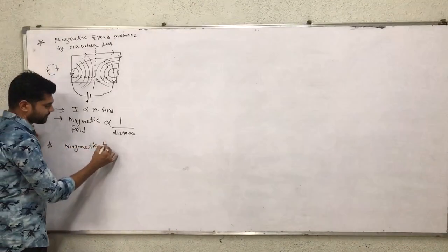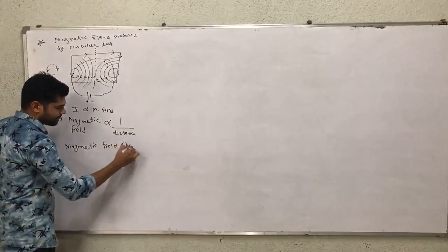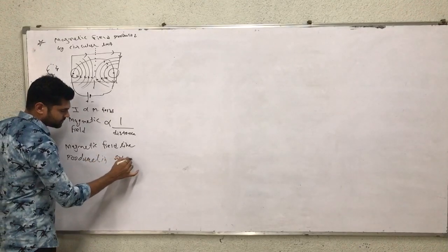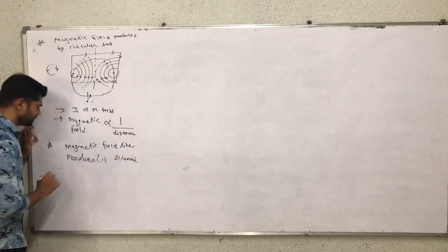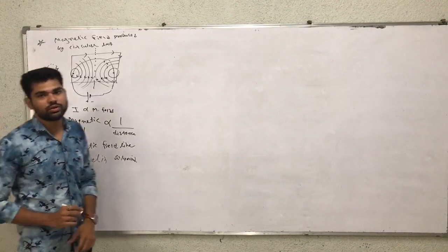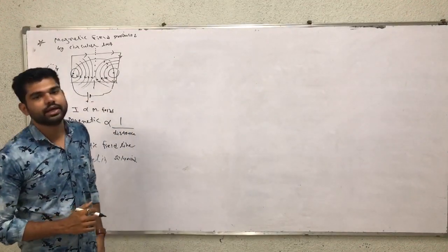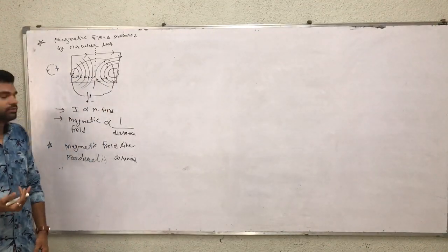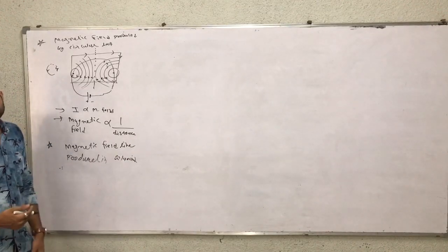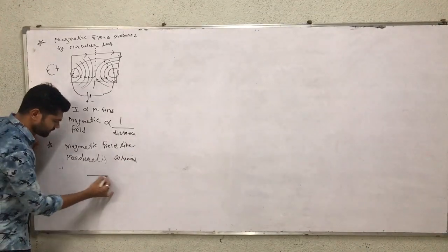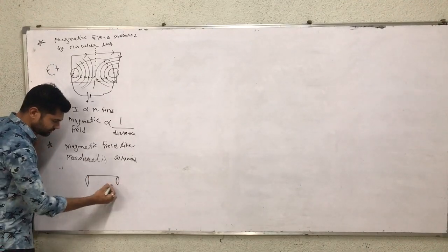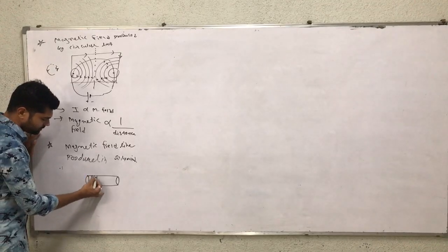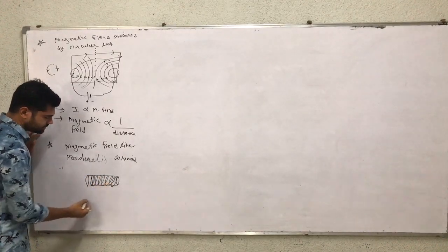Magnetic field lines produced in a solenoid. A solenoid is a hollow cylindrical object, and we can use a number of loops in a circular path. This figure is known as a solenoid. For example, a hollow cylindrical pipe — we use a number of loops of coil.